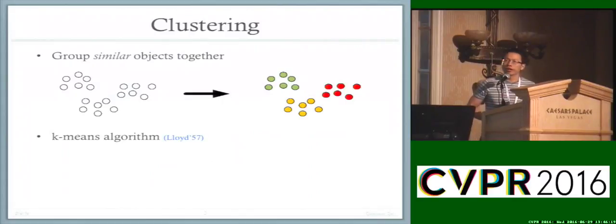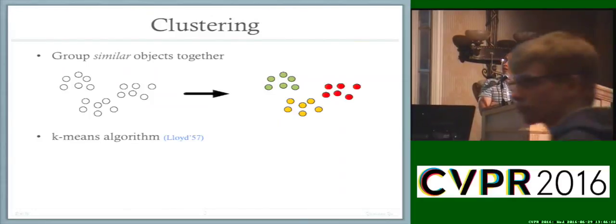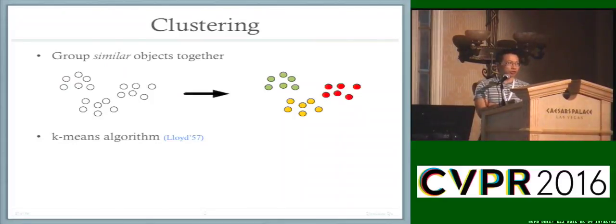So clustering, as we all know, is to group similar objects. And the challenge is, of course, the notion of similar objects is highly subjective, and it's usually very hard for the algorithm to figure this out just by itself. An extremely popular algorithm for clustering is the k-means algorithm.